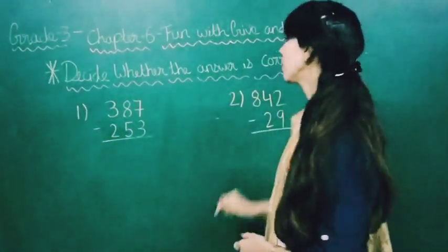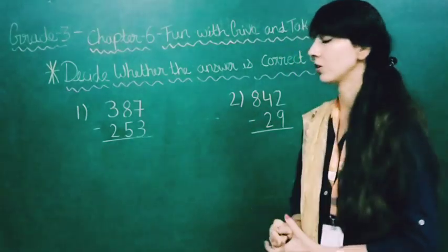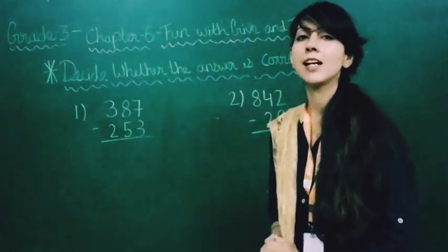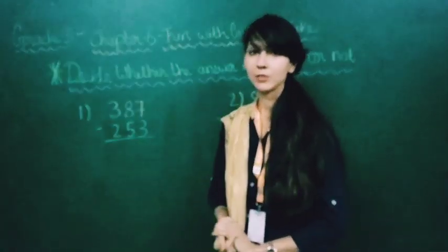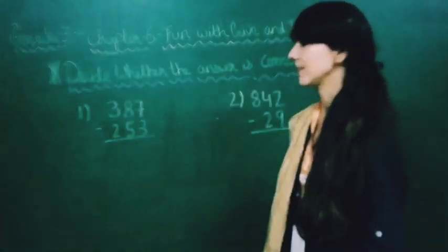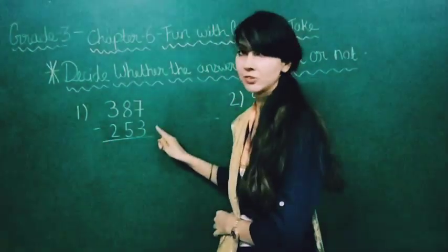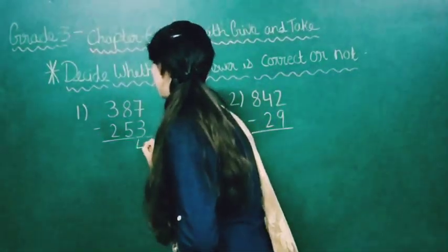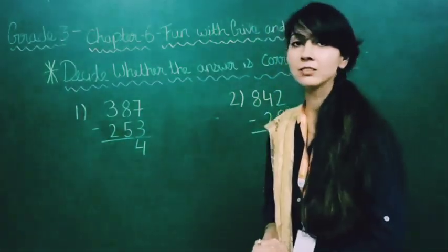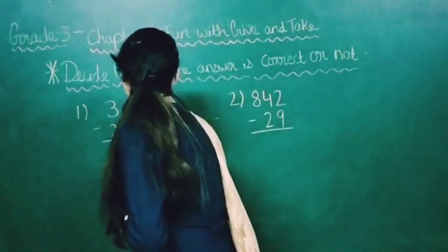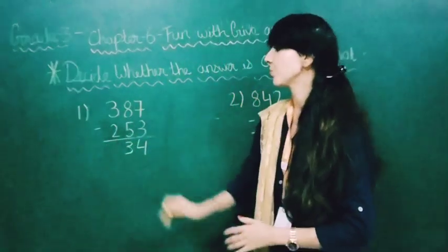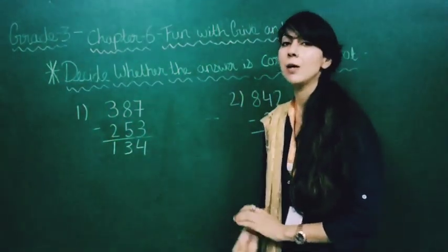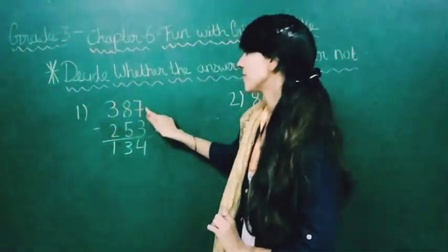Decide whether the answer is correct or not. First we will do subtraction, then we have to verify that we are getting the correct answer. From the left side: 7 minus 3 is 4. Then 8 minus 5 is 3. And 3 minus 2 is 1. So the answer we got is 134.